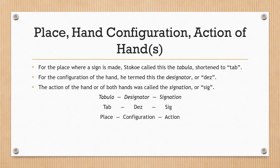For the place where a sign is made, Stokoe called this the tabula, shortened to tab. For the configuration of the hand, he termed this the designator or DES. The action of the hand or both hands was called the signation or SIG. Tabula, designator, signation — tab, DES, SIG — correspond to place, configuration, and action respectively.